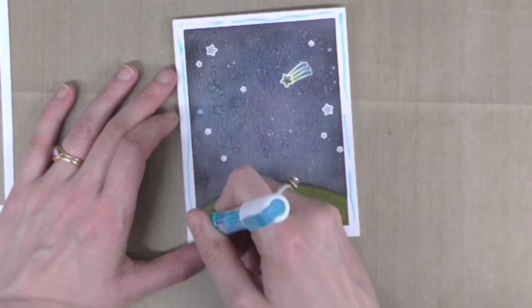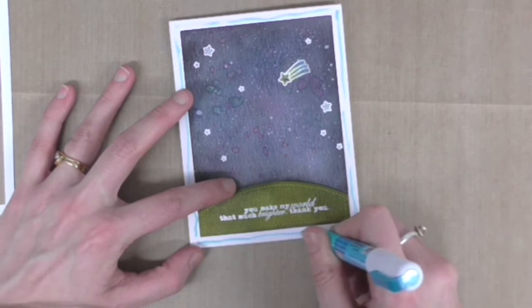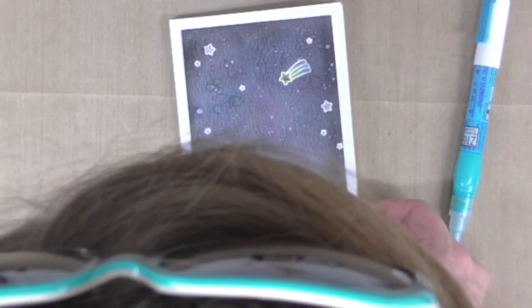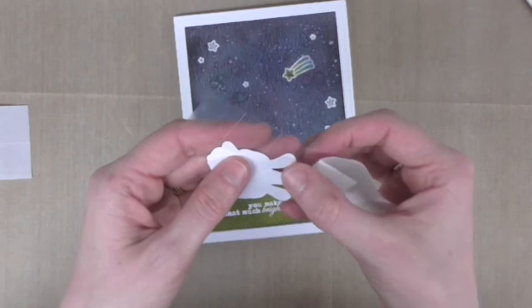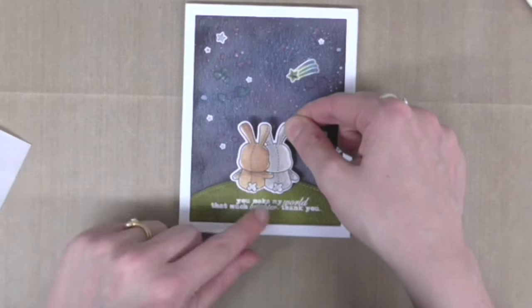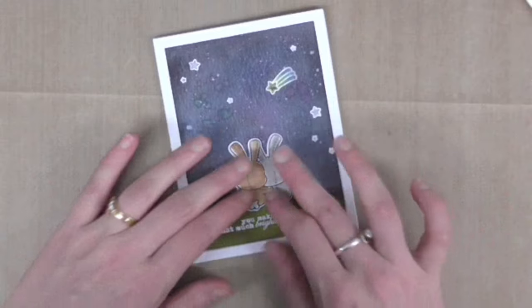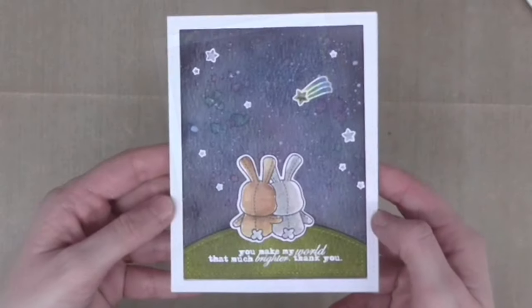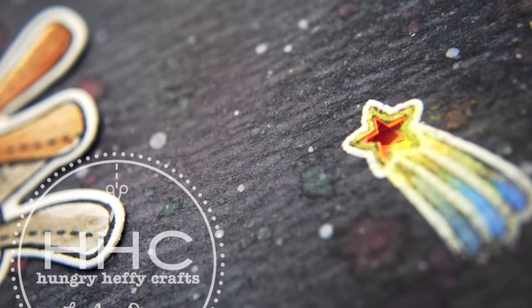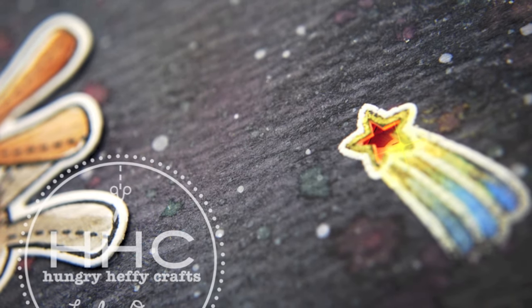Now I want the outside frame to have the same texture as my cardstock, so I'm taking that original frame from the very first die cut that I did from the Tim Holtz watercolor cardstock. Then I can secure my little bunnies with a glue dot. That's it, that's the final card. When you press the bunny, the little light in the star shines.